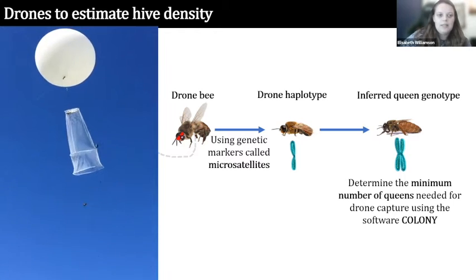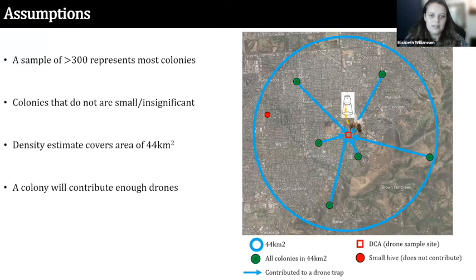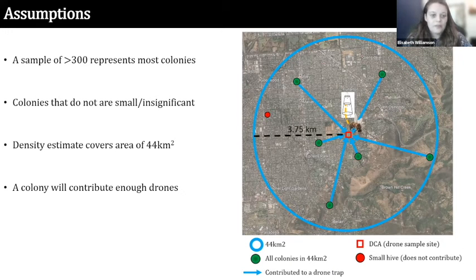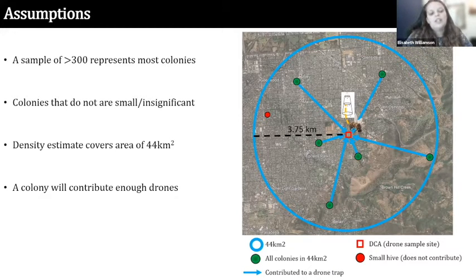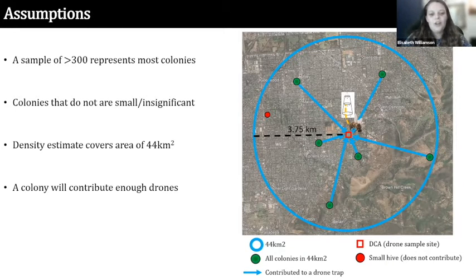There are a number of assumptions that these density estimates are based on. The first assumption my research focuses on is that a sample of more than 300 drones will represent most of the colonies in the environment, and that colonies not represented are small, weak, and ecologically insignificant. Another assumption is that a density estimate covers an area of 44 kilometres squared, based on the maximum flight distance of a drone of 3.75 kilometres. The last assumption is that a colony contributes enough drones — on average six per sib ship — to ensure accurate inference. Below that threshold you get a non-detection error where drones are assigned incorrectly to sib ships.